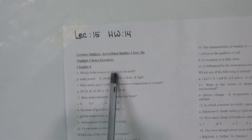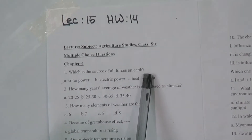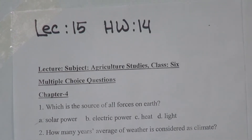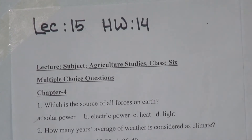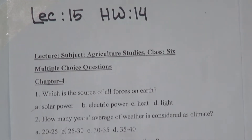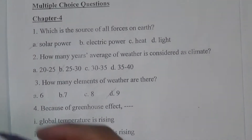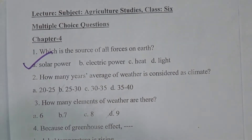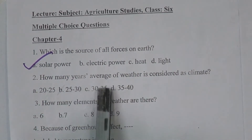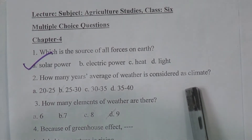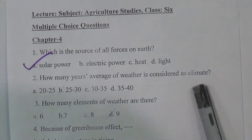My first question: which is the source of all force on earth? We know that the source of all force on earth is our solar system — solar power. Second question: how many years average of weather is considered as climate? We know that the average of 25 to 30 years of any area is called climate, so it should be 25 to 30.